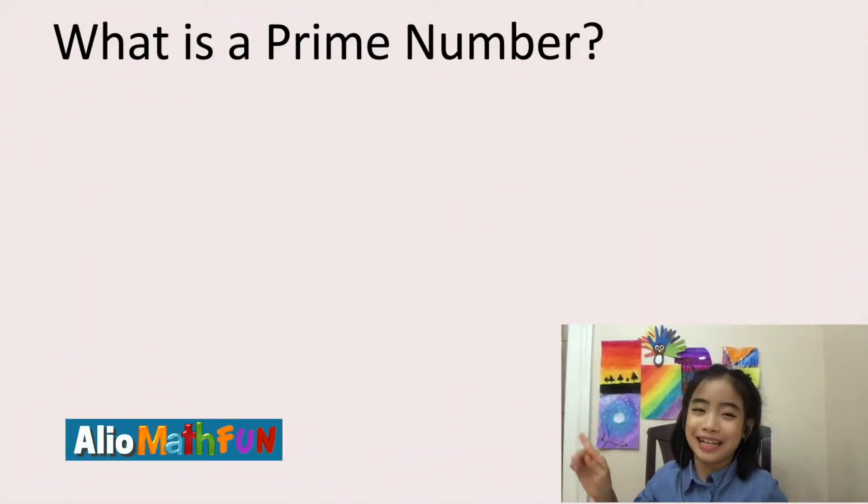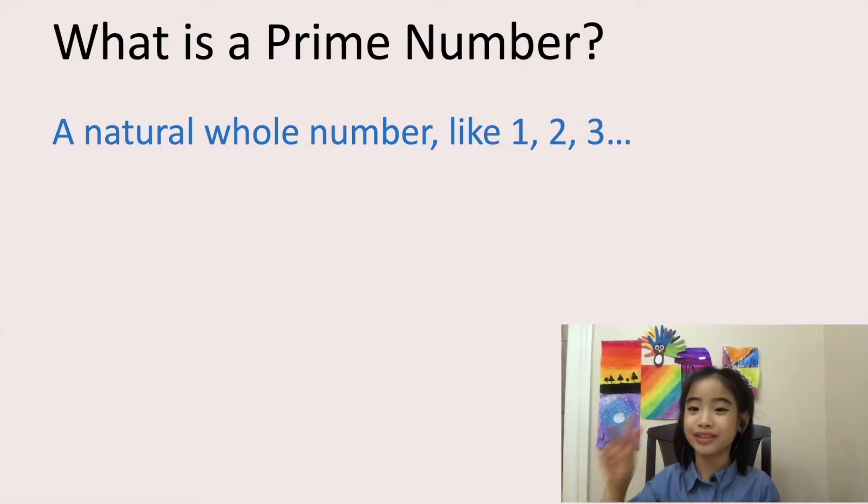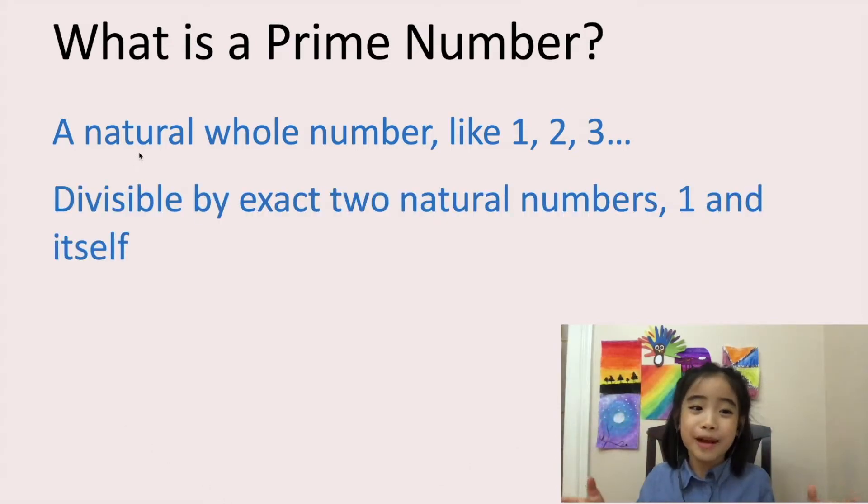So the first question is, what is a prime number? Well, a prime number is a natural whole number, like 1, 2, 3, and so on. So a prime number can be divisible by exactly two natural numbers, one and itself.